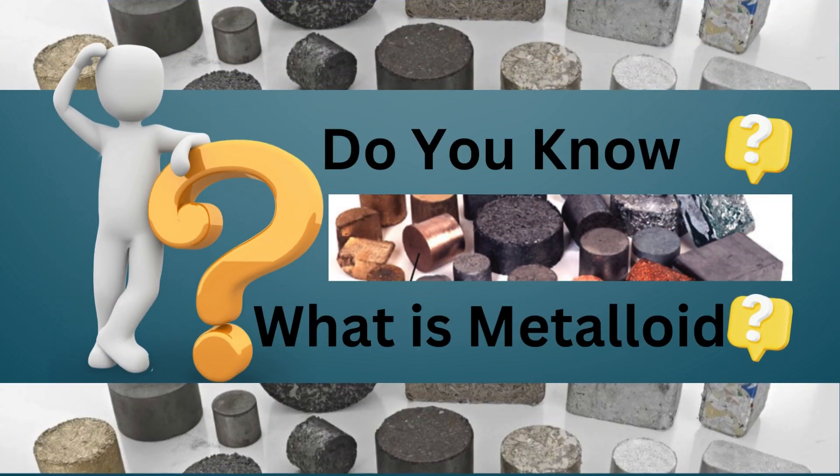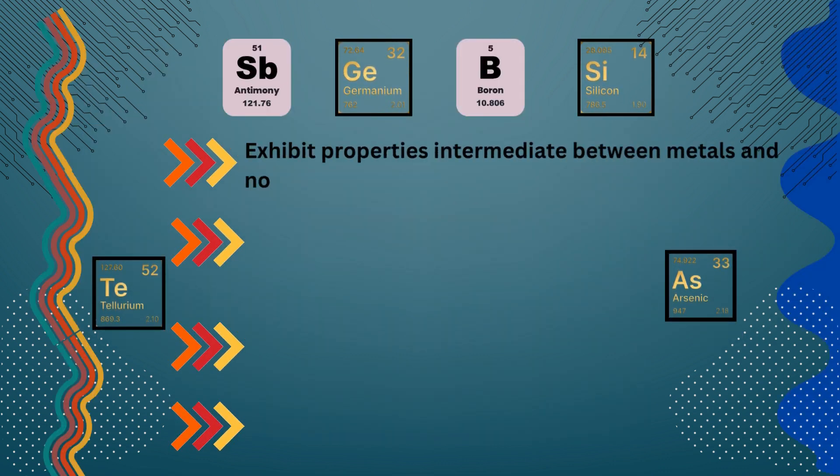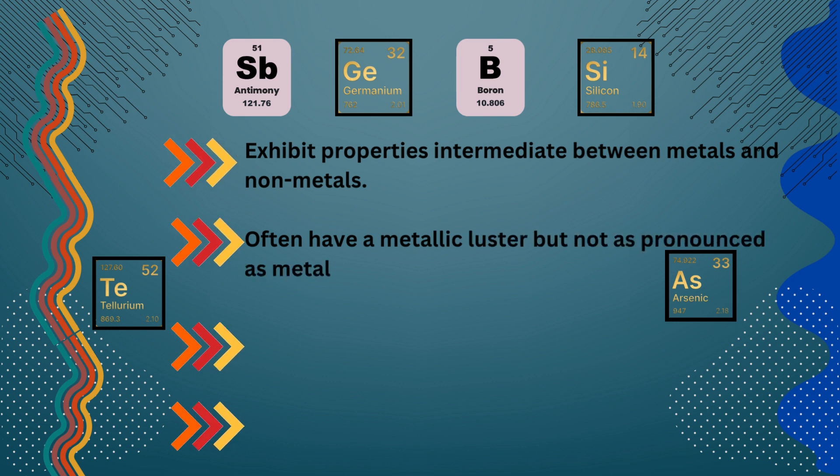Do you know what is metalloid? Metalloid. Exhibits properties intermediate between metals and non-metals. Often have a metallic luster but not as pronounced as metals.